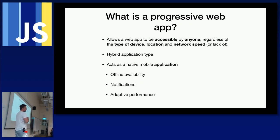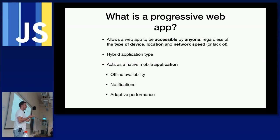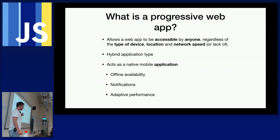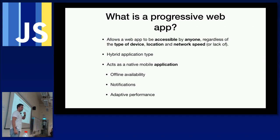If you think about a native mobile application — apps you install from the App Store or Google Play — those have features like offline availability. You may not have network but you can still launch the app and potentially interact with it. For example, a news app would show cached news, then refresh when you go online. You also get notifications. Progressive Web Apps enable these features, plus adaptive performance.